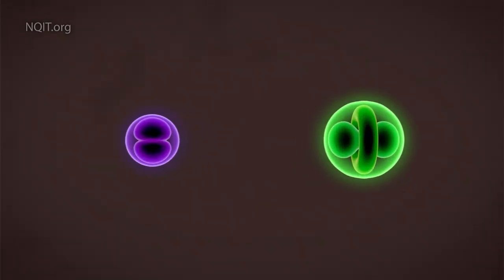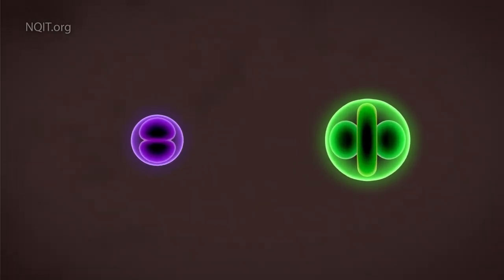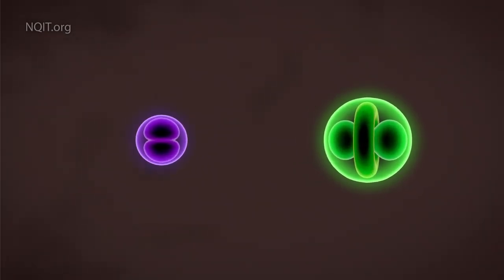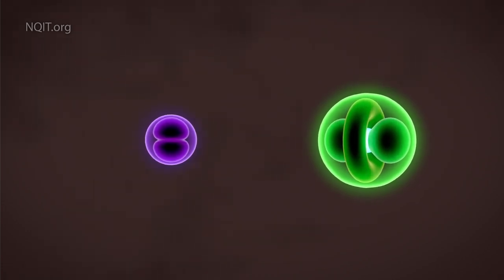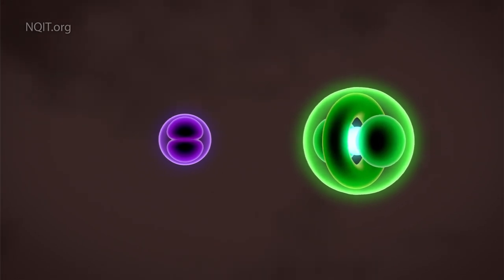An ion is a charged atom. Here we see two of them, a calcium and a strontium ion. They are superb, controllable quantum systems, and we can store information into either one.